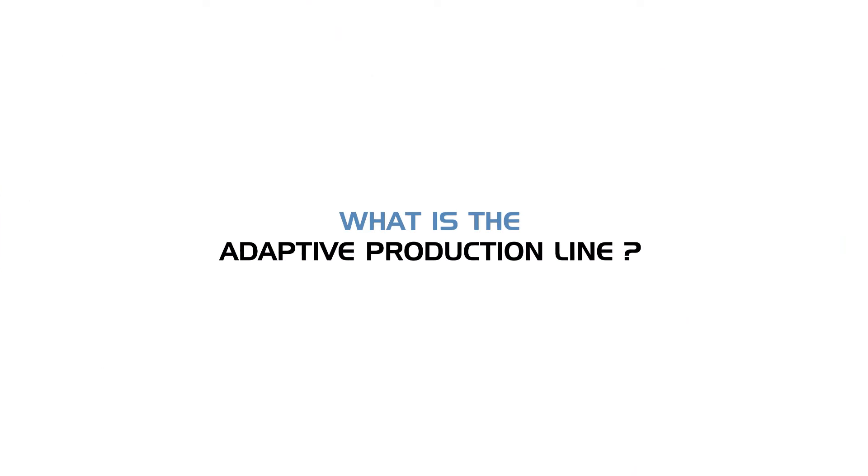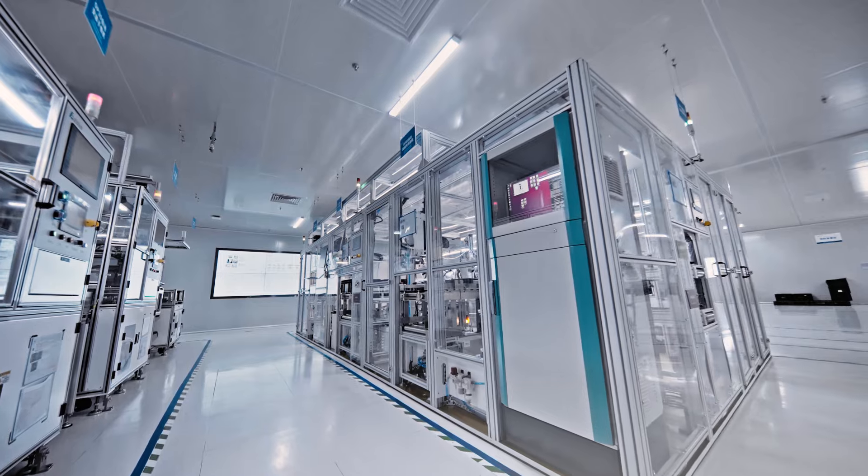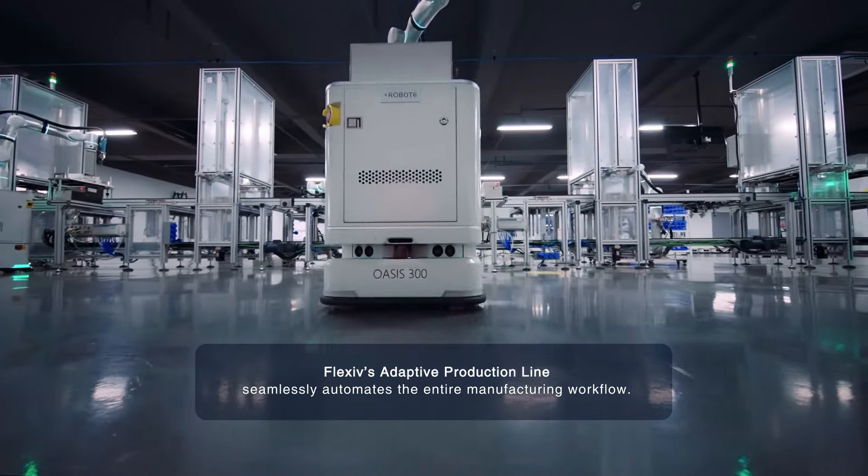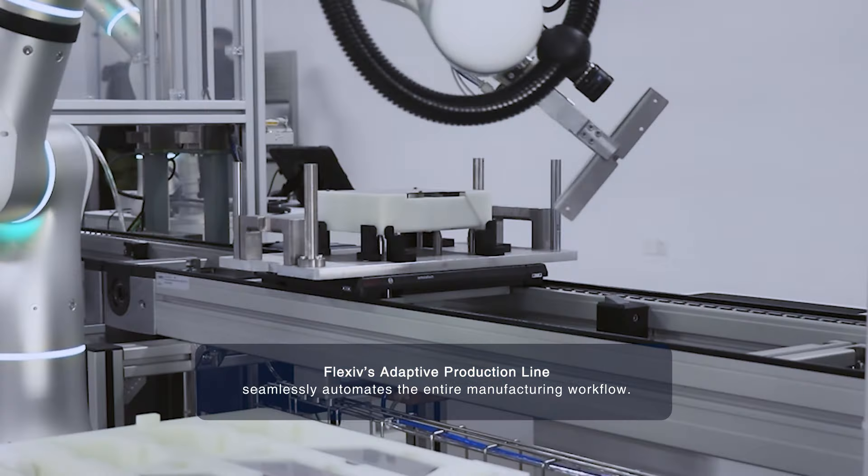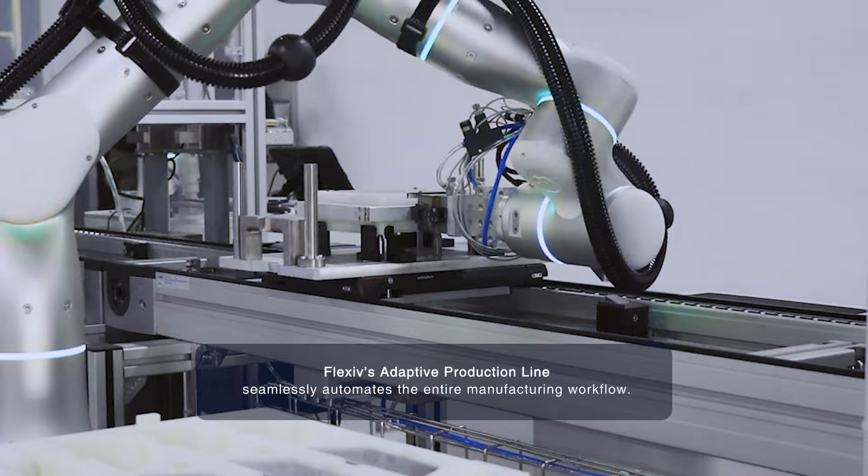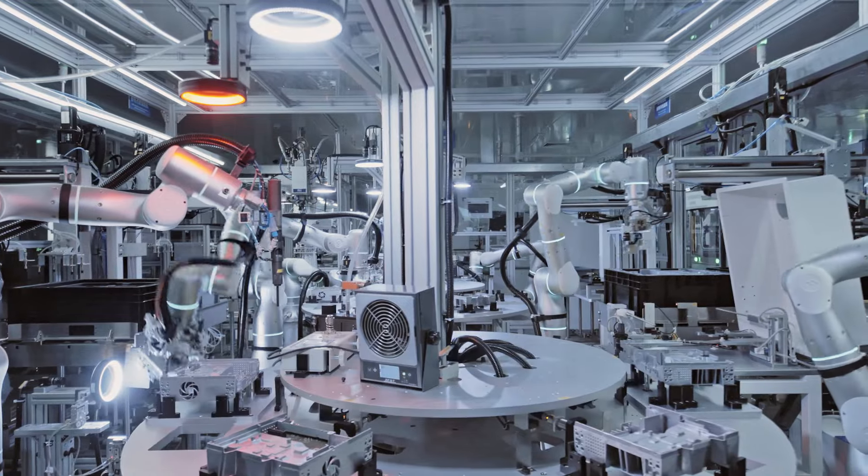What is the Adaptive Production Line? Flexiv's Adaptive Production Line seamlessly automates the entire manufacturing workflow, creating a fully integrated production cycle.